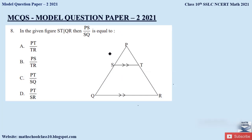Question 8: In the given figure, ST is parallel to QR. Then PS/SQ = ? This question is from the Basic Proportionality Theorem: if a line is drawn parallel to one side of a triangle to intersect the other two sides in distinct points, those sides are divided in the same ratio. Since ST ∥ QR in triangle PQR, PS/SQ = PT/TR. The correct option is option A.